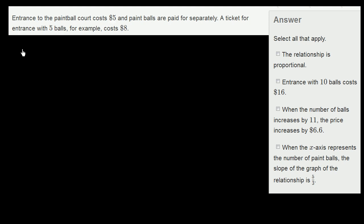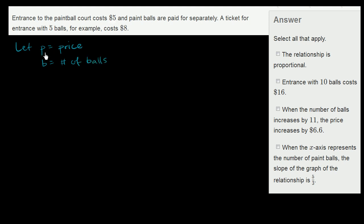So let's define some variables here. Let's let P equal the price that I'm paying for admission and the balls, and let's let B equal the number of balls. We know that the price is going to be a function of the number of balls. We can make a little table where, for a given number of balls, we figure out what the price is going to be.